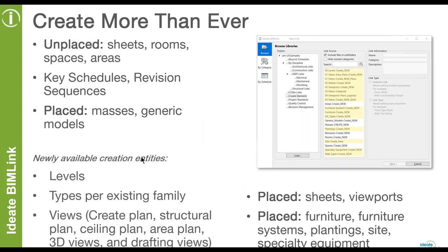BIMLink also helps you create new sheets, rooms, spaces, and areas. You can create key schedule information or revision sequence information. You can also create new content from information placed in your model — for example, if you've placed masses or generic models, you can create new types. Newer items we're now able to create include new levels, new types for existing loaded families, new views, sheets, furniture, and furniture systems. BIMLink has a lot of power — it's not just about editing data; we can also create new content.